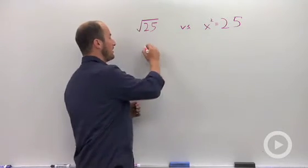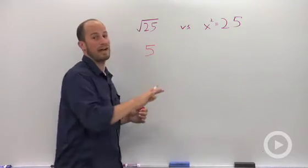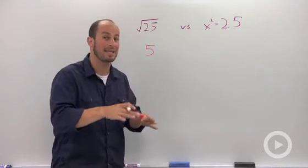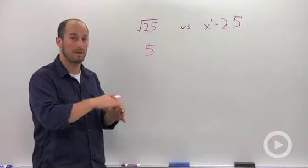So the square root of 25 is just 5. A lot of students like to put plus or minus in front of it. That's not the case. It's just positive 5.